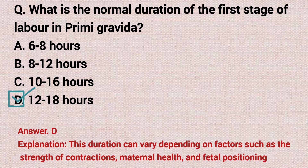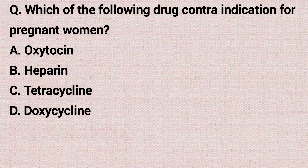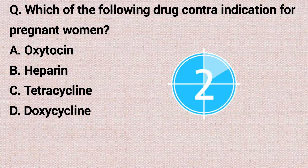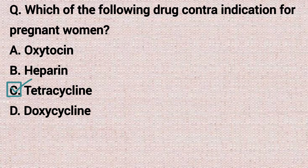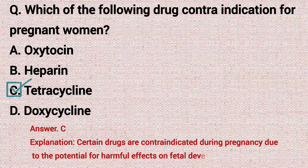The next question: which of the following drugs is contraindicated for pregnant women? Option A: oxytocin. Option B: heparin. Option C: tetracycline. Option D: doxycycline. The correct answer is option C, tetracycline.